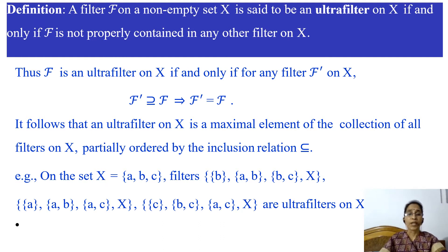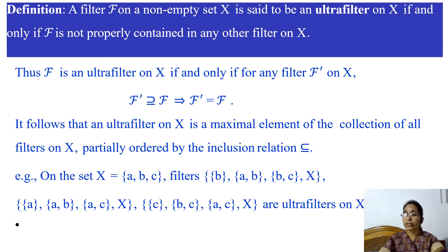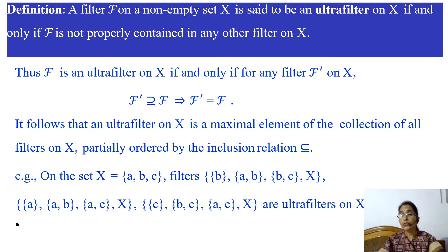For example, if we consider set X consisting of three elements A, B, and C, then the filter consisting of the singleton set {B}, the doubleton set {A, B}, the doubleton set {B, C}, and the whole set X is an ultrafilter on X, because we cannot find any filter on X which properly contains this filter.